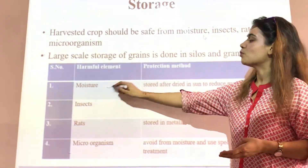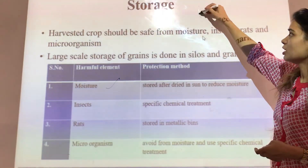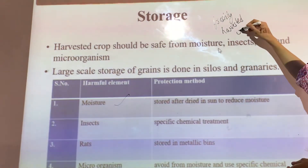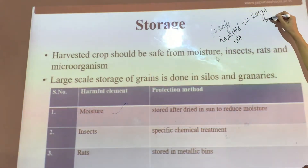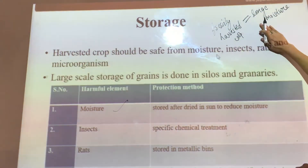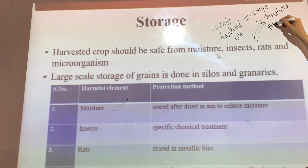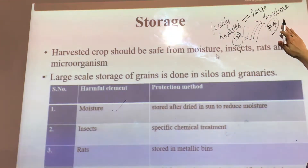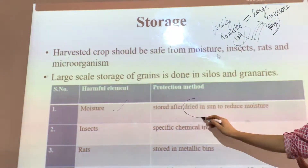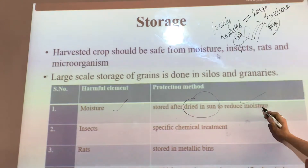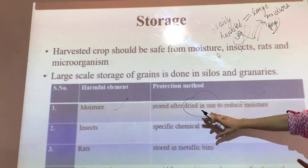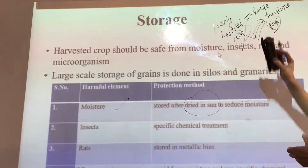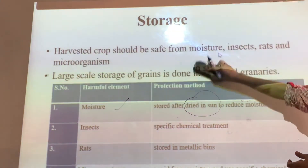The first harmful element is moisture. Once the crop is harvested, the freshly harvested crop has a large quantity of moisture. That moisture can attract the growth of fungi and other bacteria, which can damage the crop. So we need to store any crop after drying it in the sun for some days, so that we can reduce the moisture before storing it.